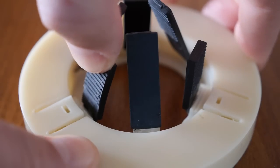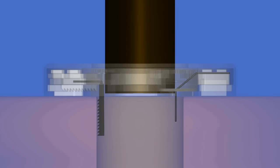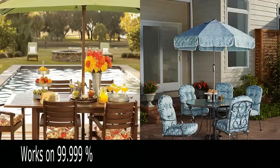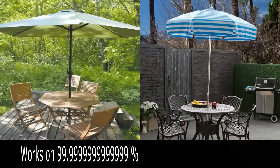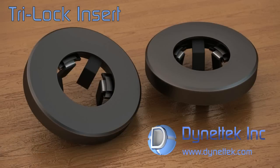Also, there are three other springs that hold the umbrella in place. It works on 99.999999999% of tables and umbrellas—at least that's what my dad says. The Tri-Lock Insert is easy to use. You just set the tabs to the desired size and place it into the hole.